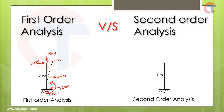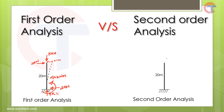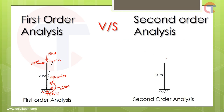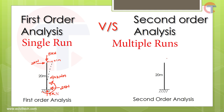Now let us do the second order analysis of the same structure. Second order analysis is also called P-delta analysis or non-linear analysis. The basic difference is we do multiple runs of analysis on the same structure in second order analysis, whereas in first order analysis we run the analysis one time only. Let me explain how.